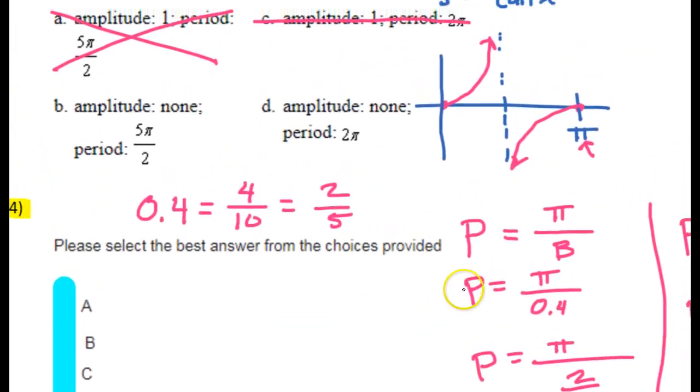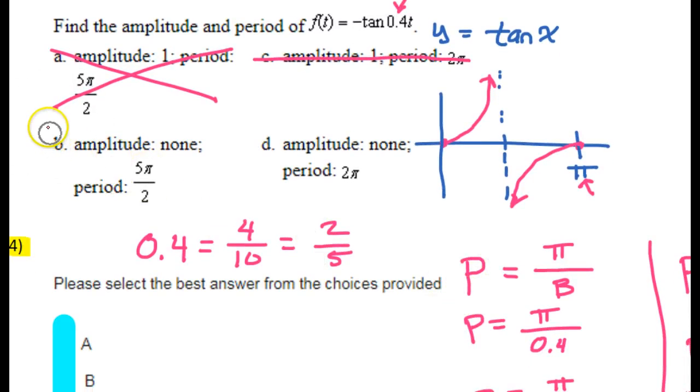So that's why choice B is going to be the answer. Amplitude none, period 5 pi over 2.